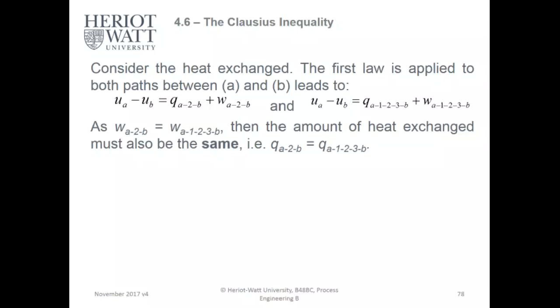You can either take the direct route or the cyclic route, but the cyclic route is your Carnot cycle. Then the amount of heat exchanged must also be the same, so QA to B equals QA1 to 3B. The energy balances whatever route you take to meet the final destination of your compression. Think of it as a vector.